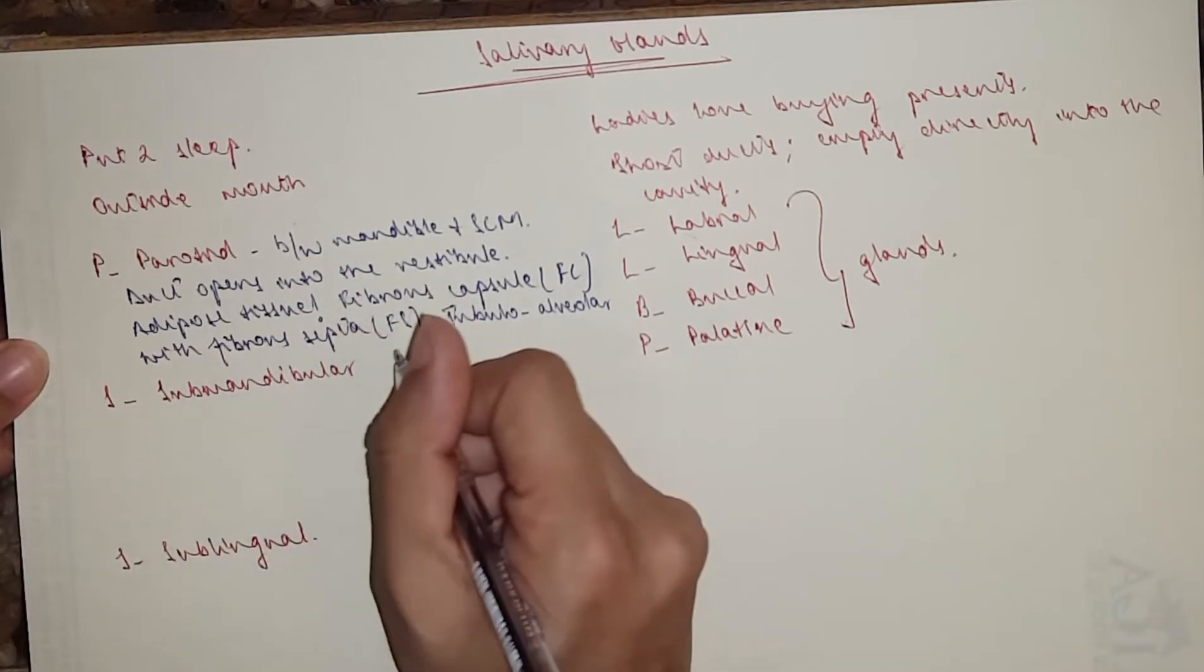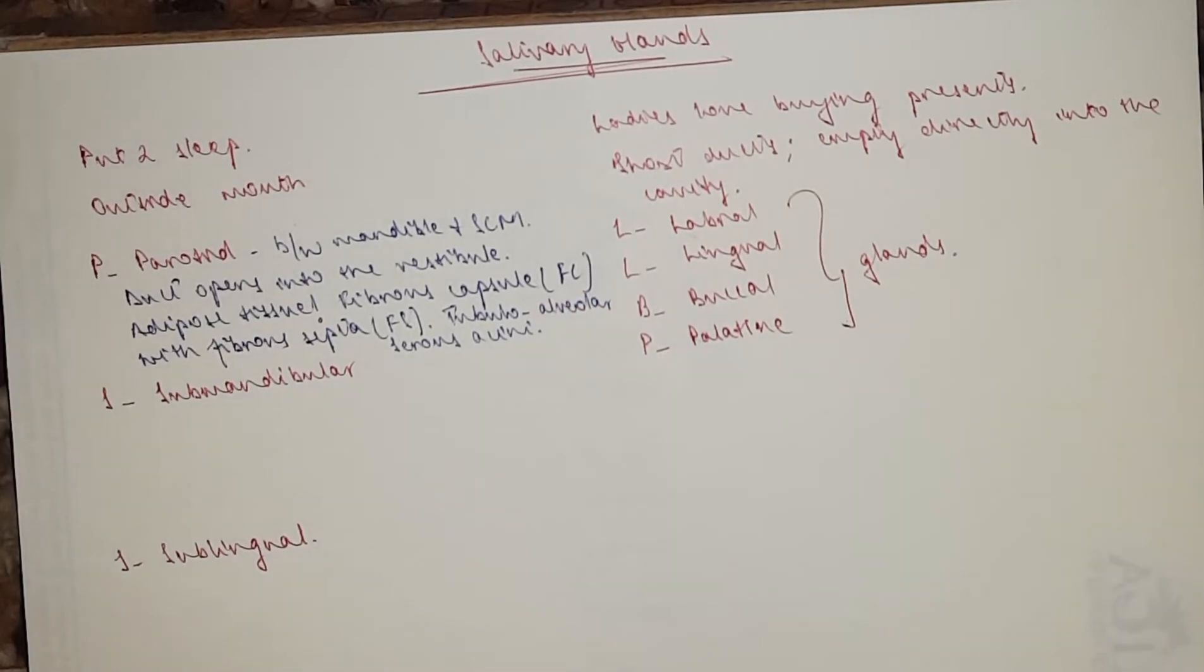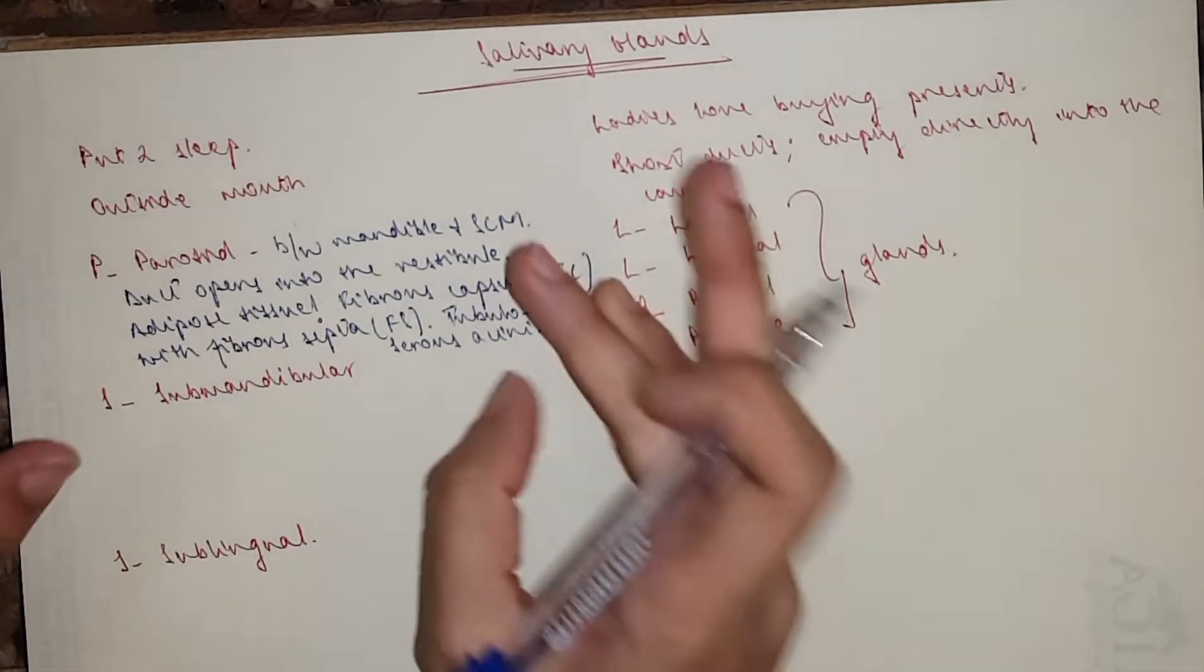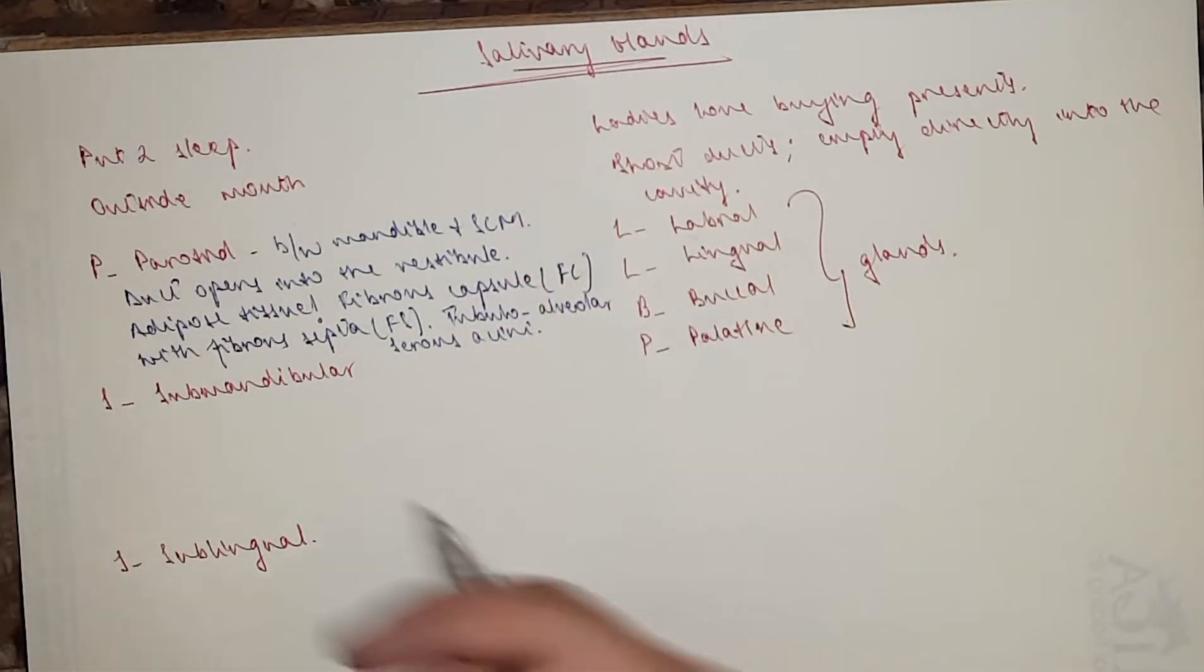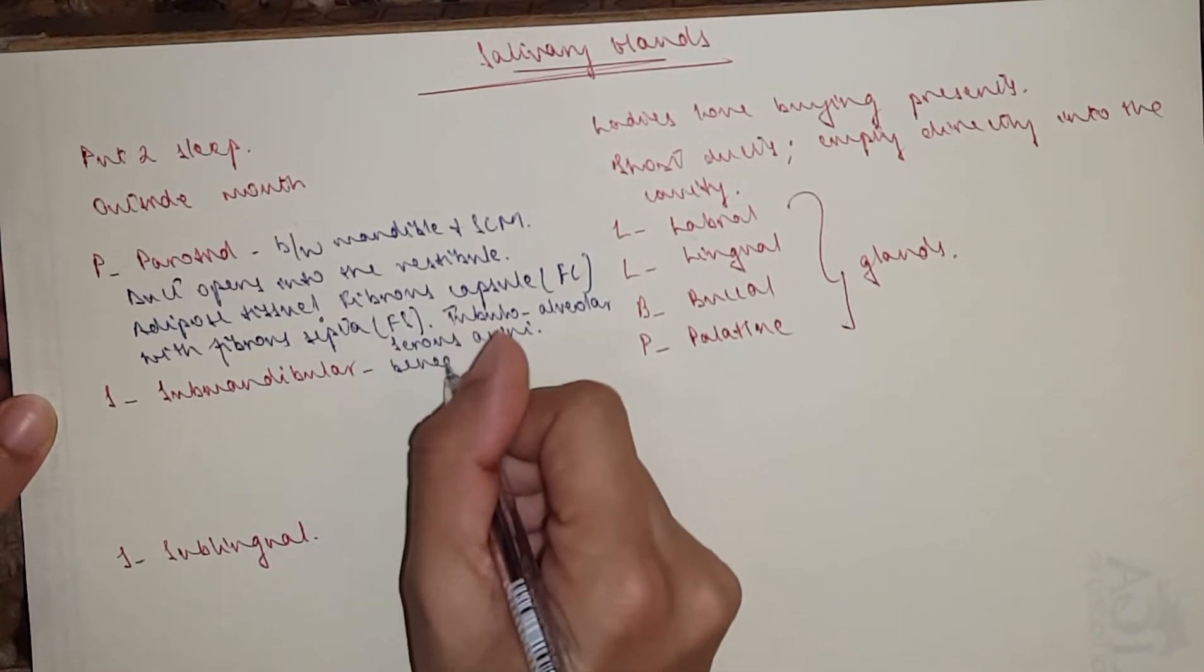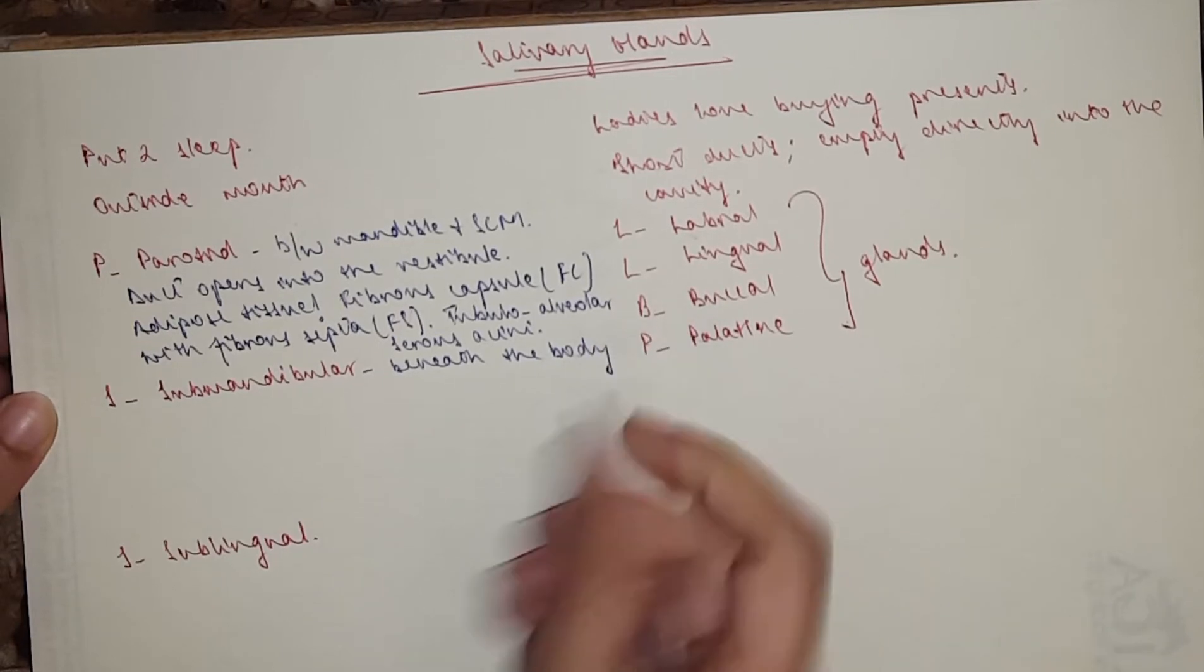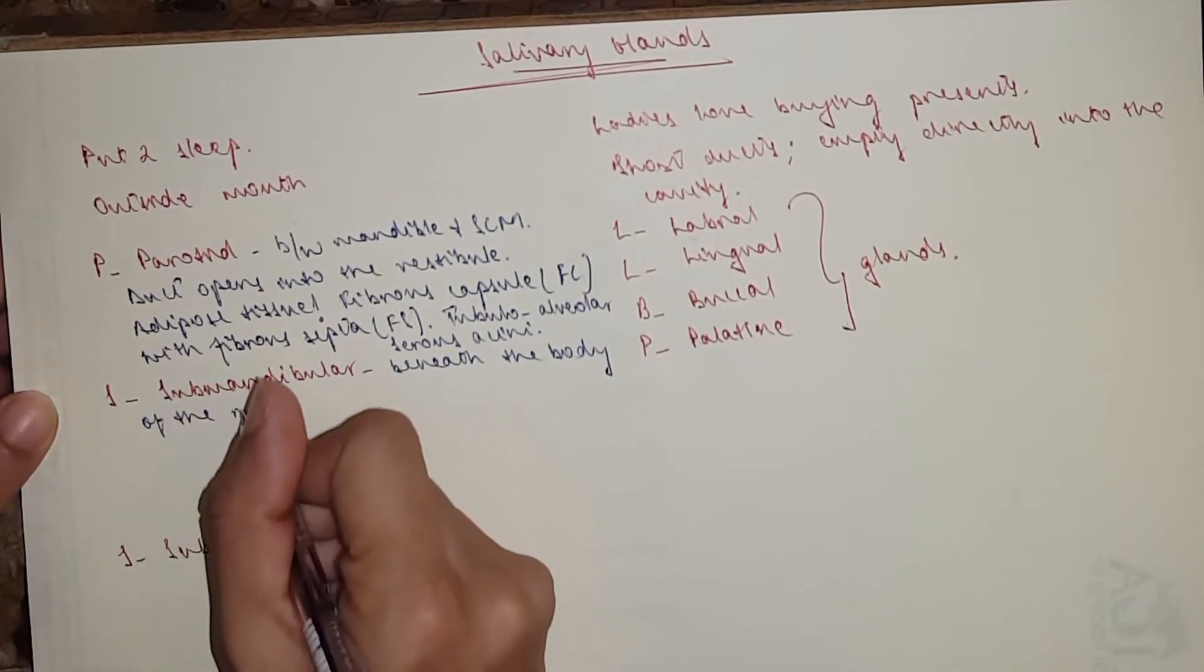And the type of the duct or gland would be tubuloacinar type. And which type is it, serous or mucous? It would be serous acini type. Okay, that's important. Now looking at this, we can differentiate the other two. The submandibular gland is just beneath the body of the mandible.